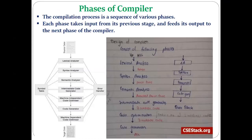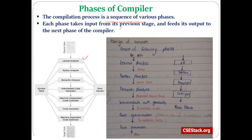The compiler design subject consists of six units, and each unit covers different phases of the compiler. The first unit was related to the introduction of the compiler and the first phase — lexical analysis. The compilation process consists of a sequence of various phases, and the syllabus is designed accordingly with six units for six phases. The fourth unit covers runtime environment.